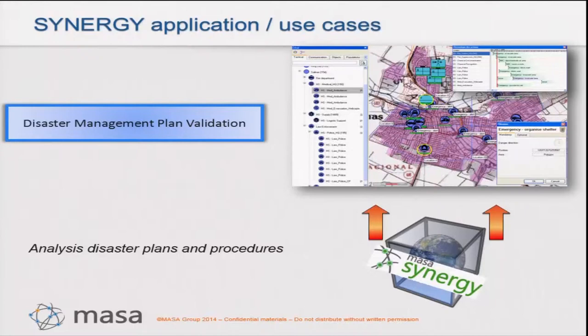But there are much more use cases, more applications of artificial intelligence than only training decision makers. Let's start with disaster management plan validation. A plan may contain, as you know, a high level of 'we assume,' 'we suppose,' 'we think,' and even 'we guess.' It is very difficult to validate these assumptions in real life. Masa Synergy, however, offers the possibility to process all these assumptions through the artificial intelligence engine, resulting in a reliable and validated emergency or disaster plan.